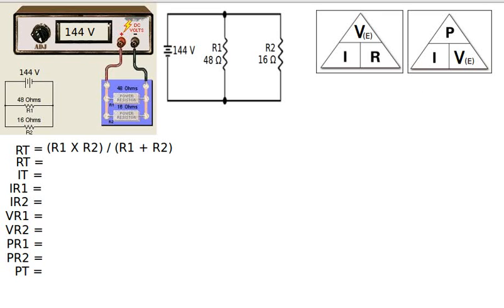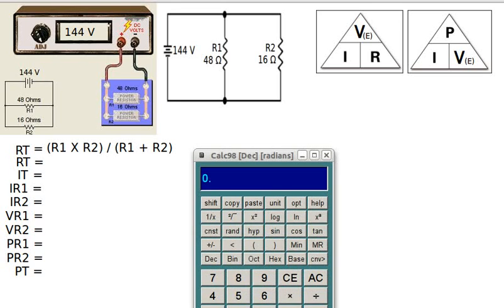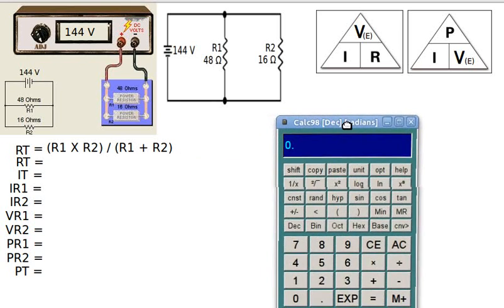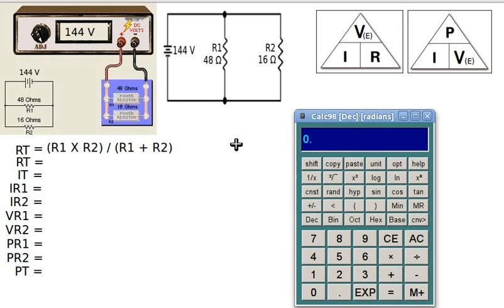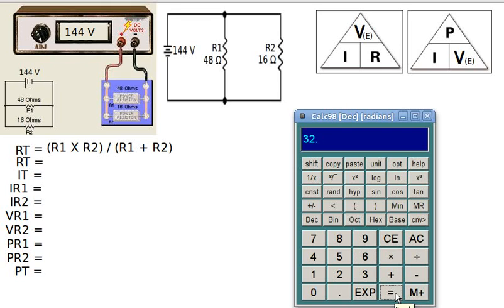Let me bring over a calculator and we'll try it out. First we type in R1, which is 48 ohms, times R2, which is 16 ohms, then press divide, then 48 plus 16. I get the answer 32.